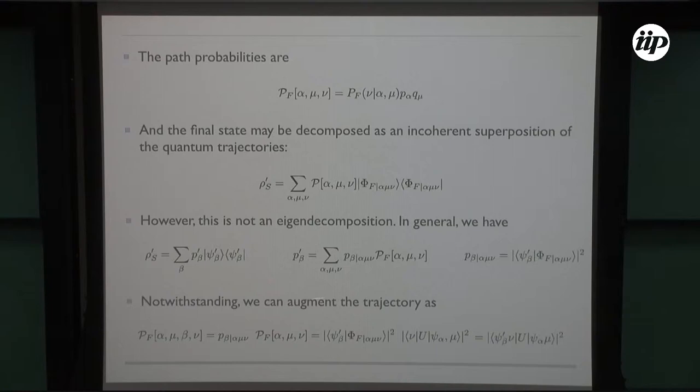This introduces the idea of augmenting the trajectory. Essentially, instead of thinking about this guy, we can also think about a larger trajectory which has four quantum numbers: system, bath, system, bath. All you need to do is start with the original trajectory and augment it with the conditional probability.